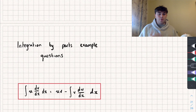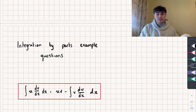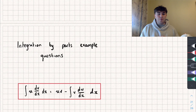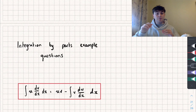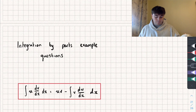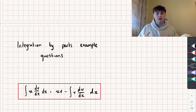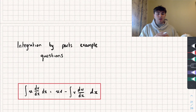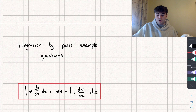Hello, in this video I'm going to work through three different example questions, each using integration by parts. It's going to be useful if you know how to integrate by parts — if you don't, I'll link my video tutorials on that in the description. I've written the formula for integration by parts in red next to every question, and I'm going to timestamp each question below so if you don't like the look of a question you can just skip through to the next one.